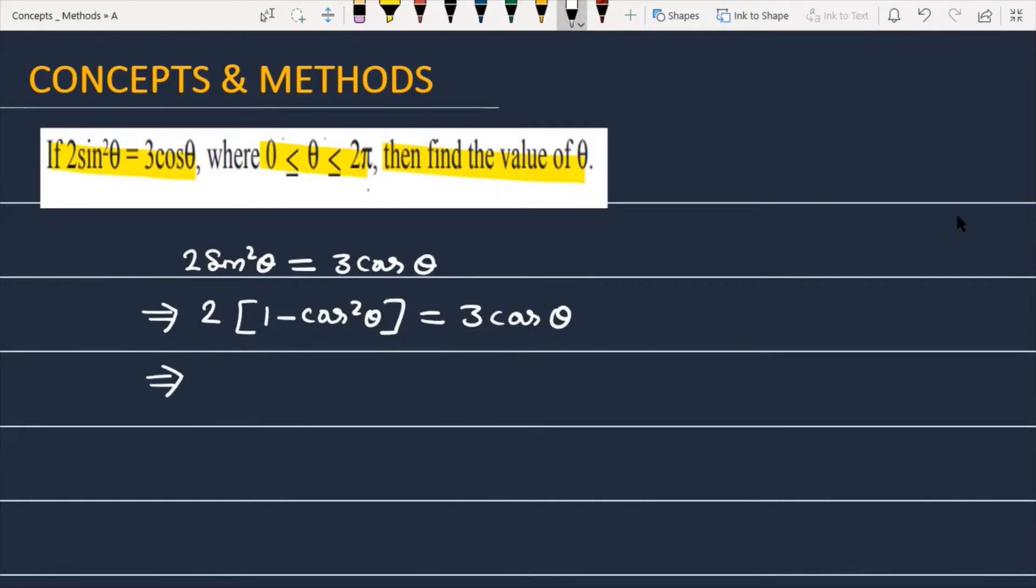In the next step, we can write this as 2 minus 2cos²θ equals 3cosθ. Then we can write 2cos²θ plus 3cosθ minus 2 equals 0.